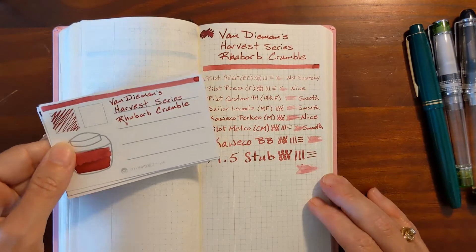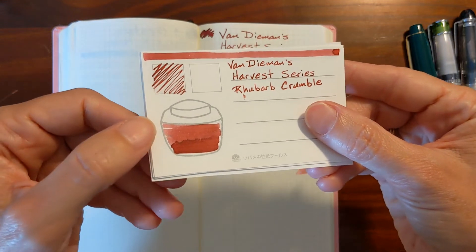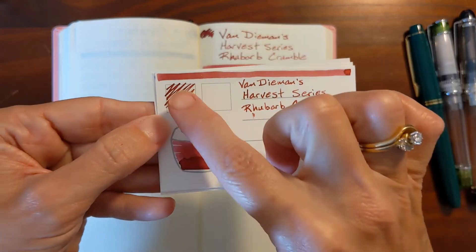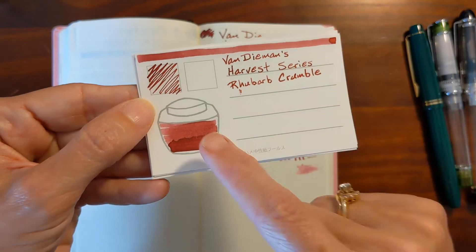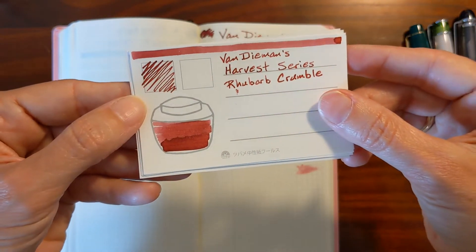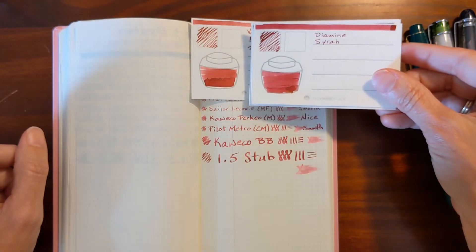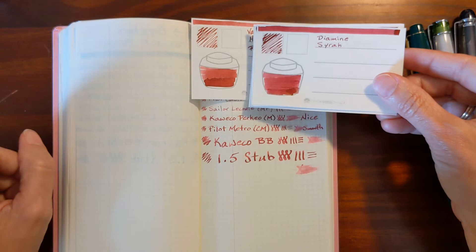Now the inks from my collection that are similar to Rhubarb Crumble, and look at that swatch in the Rhubarb Crumble, I love it. It's so uniform up here in the swatch, but you see, there is some potential for shading.